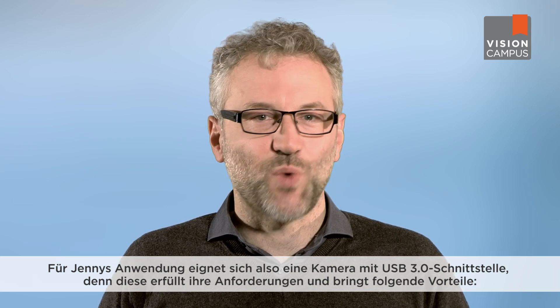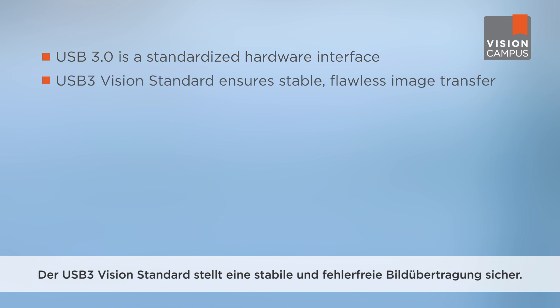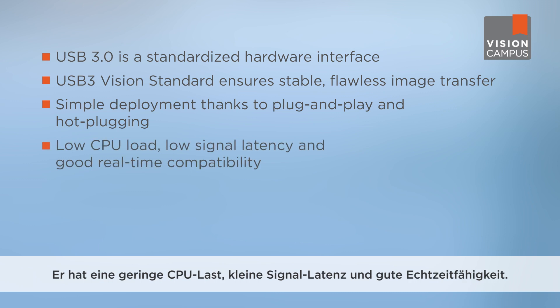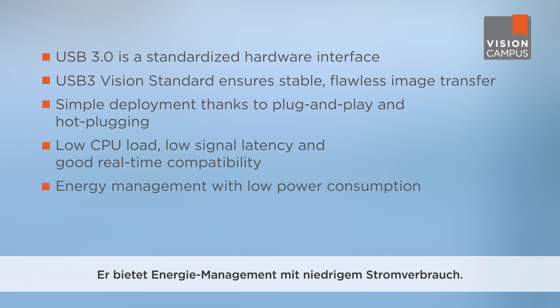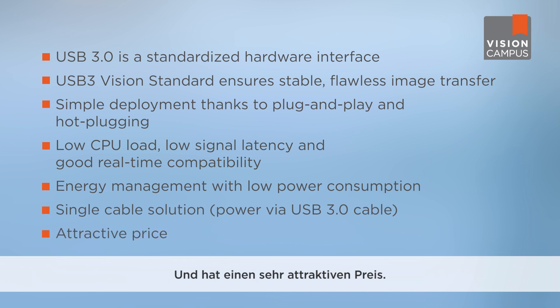So for Jenny's application, a camera with a USB 3 interface is appropriate, as it fulfills these requirements and offers the following additional benefits. With USB 3, she can use a standardized hardware interface. The USB 3 Vision standard ensures stable, flawless image transfer. It offers simple deployment thanks to plug-and-play and hot-plugging functions. It has low CPU load, low signal latency, and good real-time compatibility. It offers energy management with low power consumption and results in a single cable solution, and it has a very attractive price.